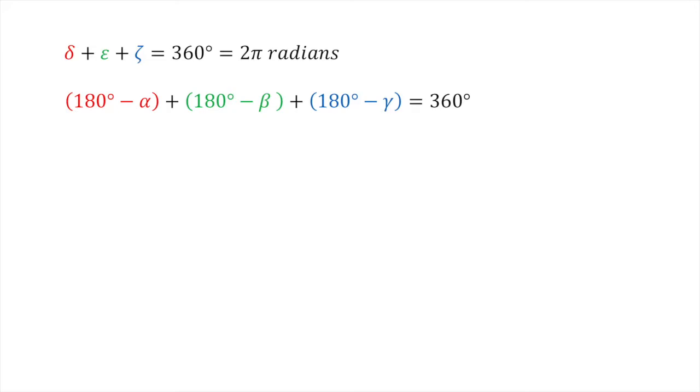The brackets on the left hand side can be removed giving 180 degrees minus alpha plus 180 degrees minus beta plus 180 degrees minus gamma equals 360 degrees.